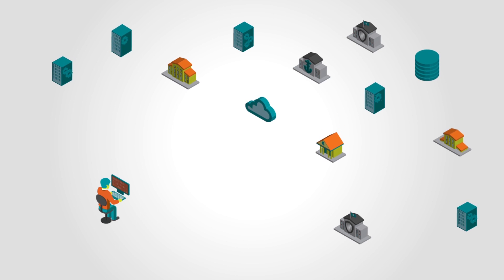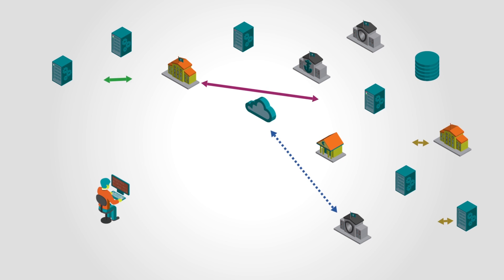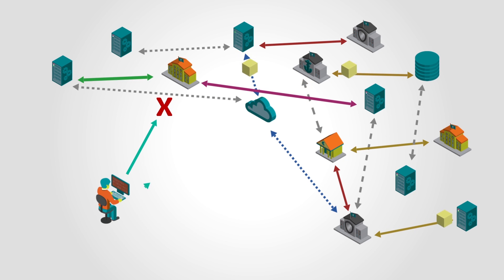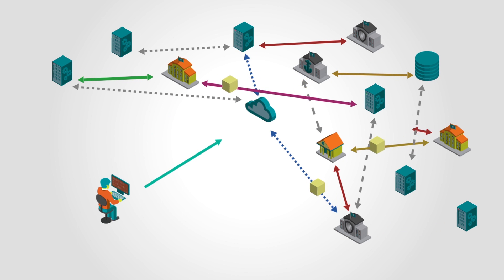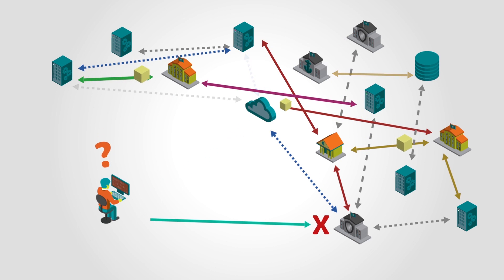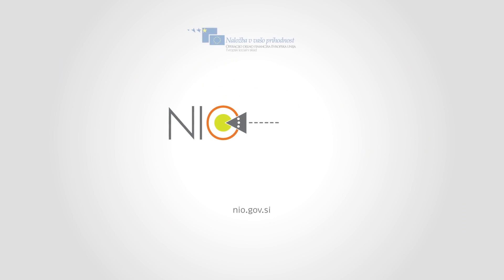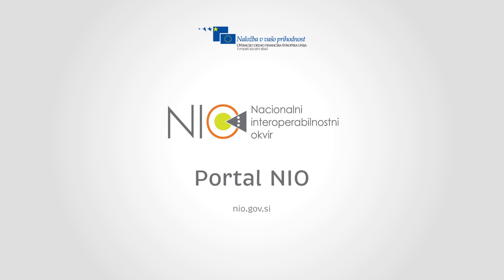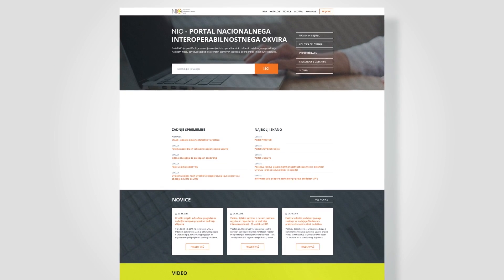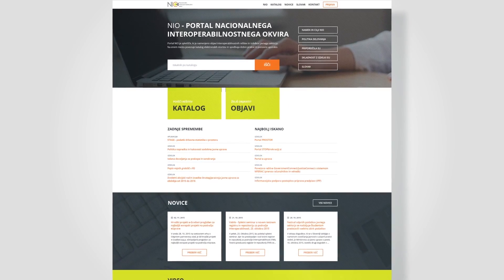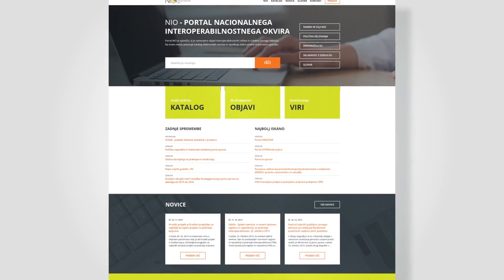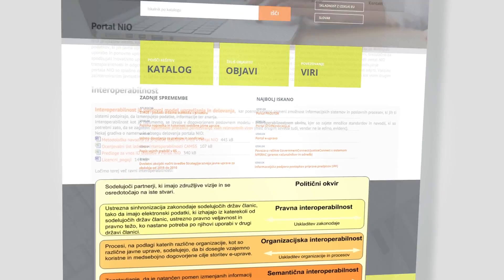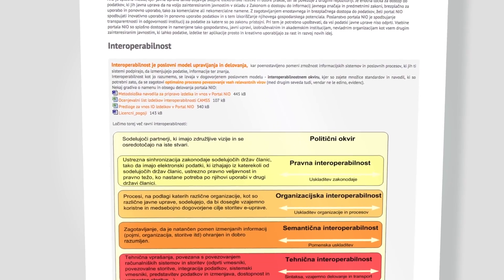The dispersion of data and different standards can lead to incompatibilities and conflicts when accessing data and suboptimal application development. The National Interoperability Portal represents a technical, semantic and organizational framework. It influences the functioning of state bodies and the public administration and everyone who interacts with them.